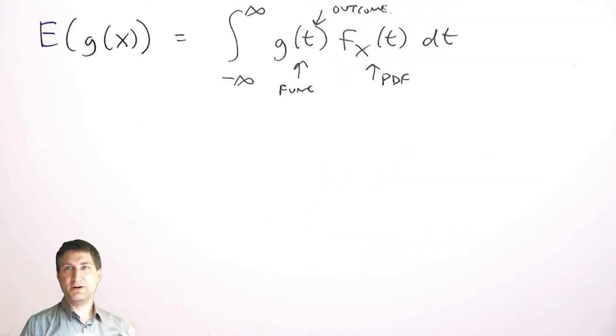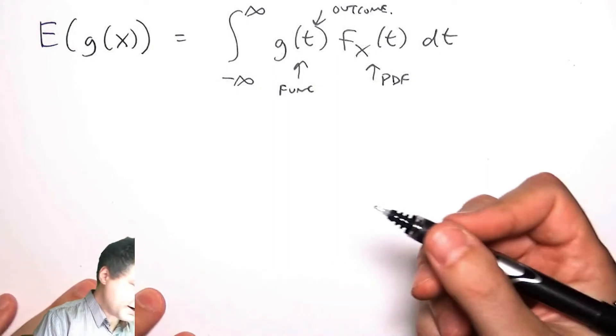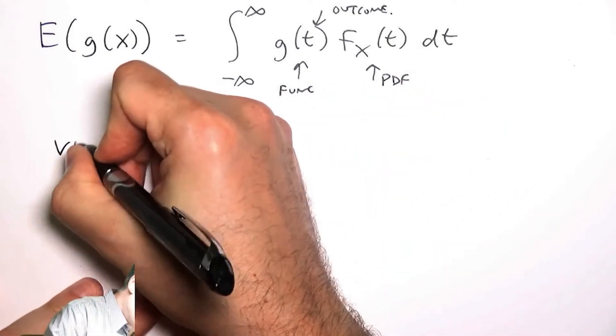For example, I've got some random signal and I want to know what is the average power of the signal, which is like the expected value of X squared. Or I've got an analog-to-digital converter which introduces some error and I want to compute the SNR which is related to the error. The most common thing you'll look at is the variance.